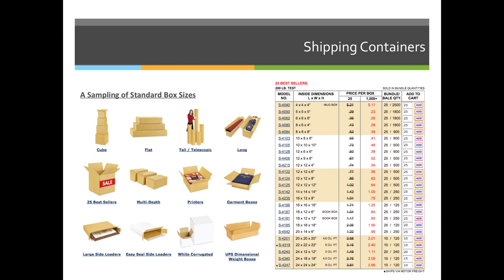Your extra credit assignment this week will be to go to the Uline website and find a box. These are just random boxes they sell. When we are quoting or figuring out how many boxes we need, we're going to specifically choose the printer boxes, which will give us the standard printing box sizes.